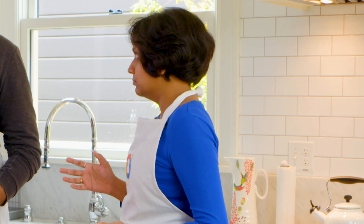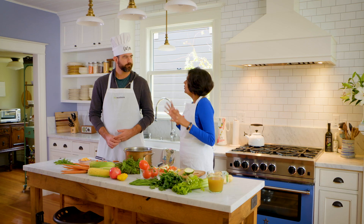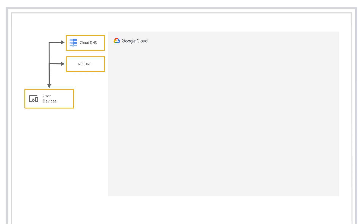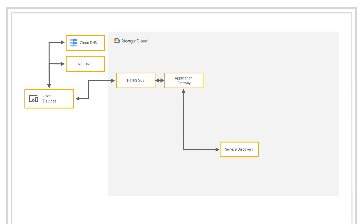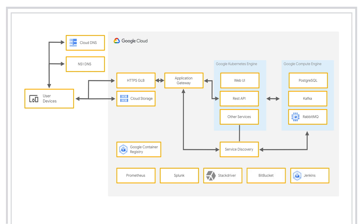How did the architecture start to look in Google Cloud? We use Google DNS for IP address lookup, and then users are routed through the global load balancer into the application gateway. From there, user devices such as web and mobile are routed into the various microservices all running on GKE, using images stored in Google Container Registry. The data backend is running on Google Compute Engine, and we have monitoring running using Prometheus, Splunk, and of course Stackdriver.